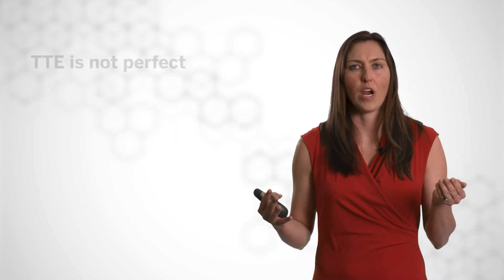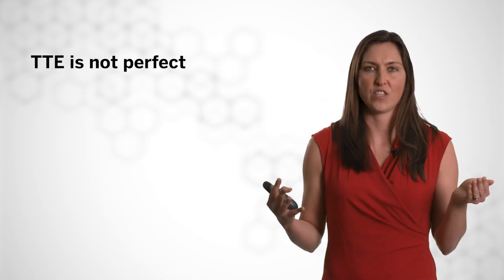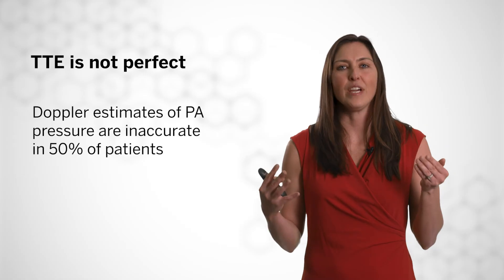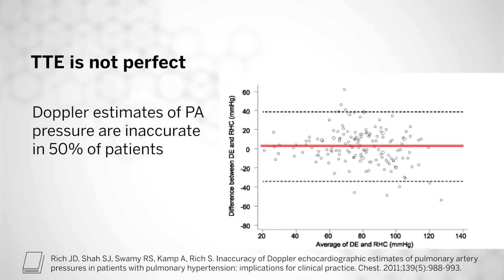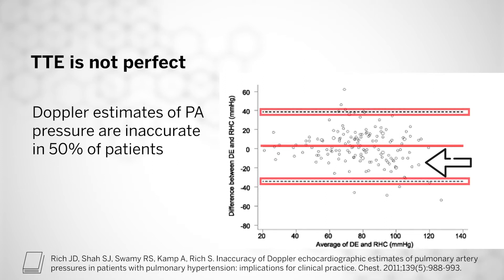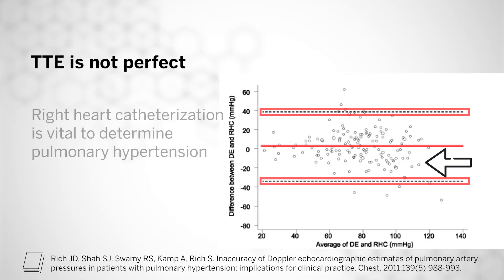Unfortunately, an echocardiogram or TTE is not a perfect test for pulmonary hypertension and can be inaccurate in close to 50% of patients. As seen in the figure, the solid line represents pulmonary artery pressures as measured by right heart catheterization, and the dots represent the difference between TTE measurements and pulmonary artery pressures, with the dotted lines as a 95% confidence interval. A TTE should be used as a tool to identify those at risk for pulmonary hypertension, but when we want to make the final diagnosis, a right heart catheterization is vital to give us a true understanding of whether a patient has pulmonary hypertension.